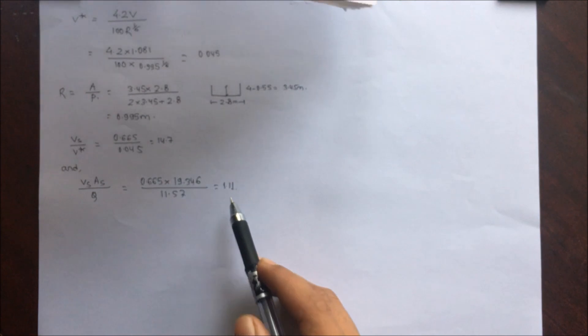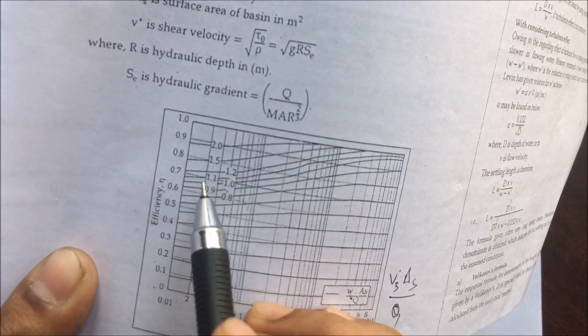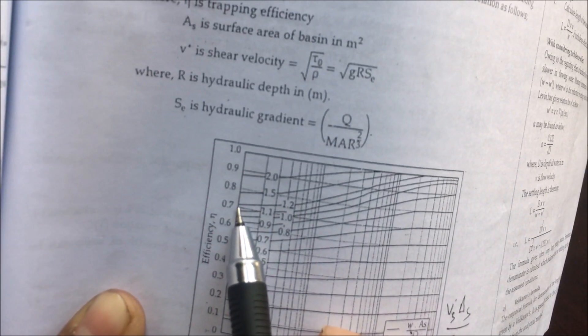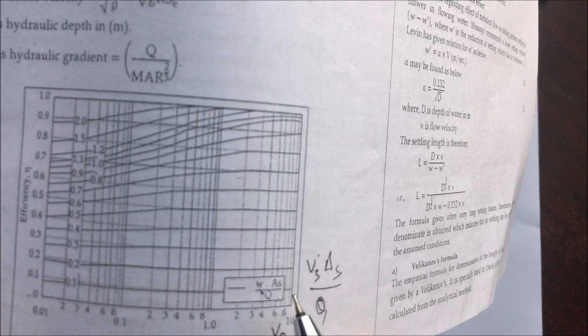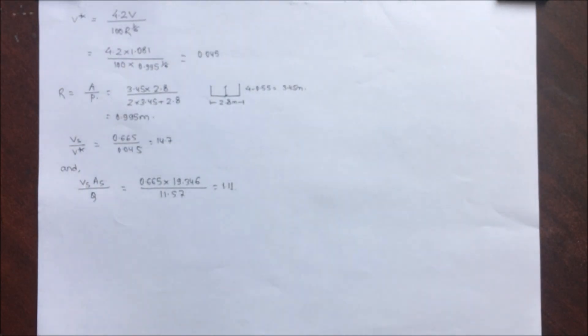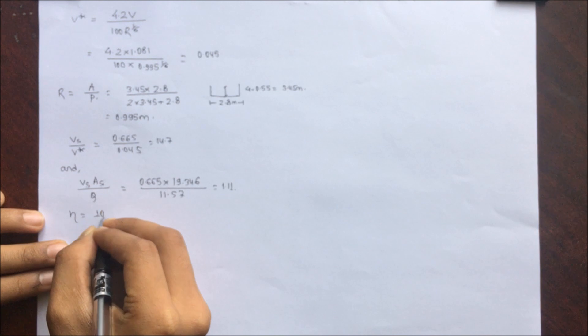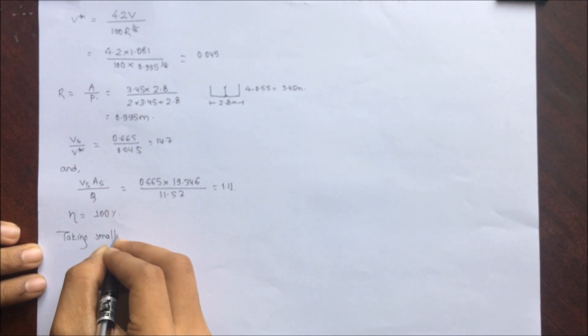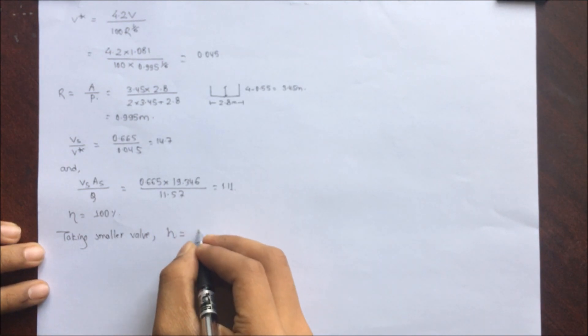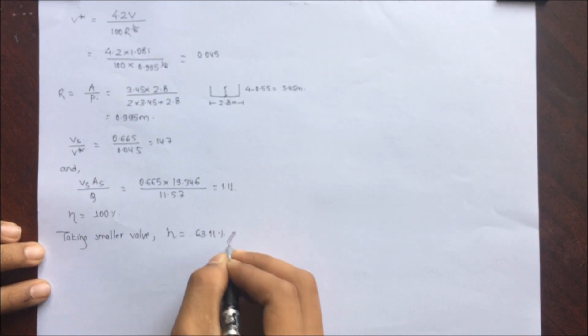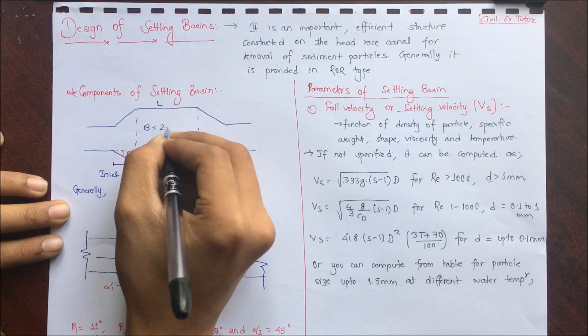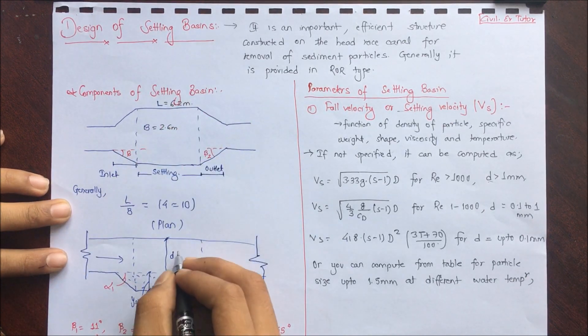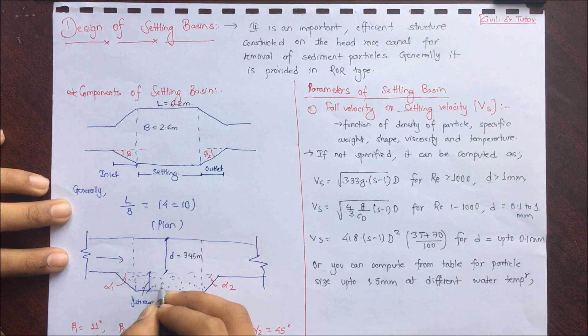From Camp's graph, for vs × As/Q = 1.11 (between curves 1.1 and 1.2) and vs/v* = 14.7 (exceeds the x-axis maximum of 10), efficiency η = 100%. Taking the lowest among the three efficiencies — 63.1% (Hazen), 66.32% (Vetter), 100% (Camp) — the design efficiency η = 63.1%. The plan shows B = 2.8 m, L = 6.2 m, effective depth 3.45 m, and sediment depth 0.55 m.